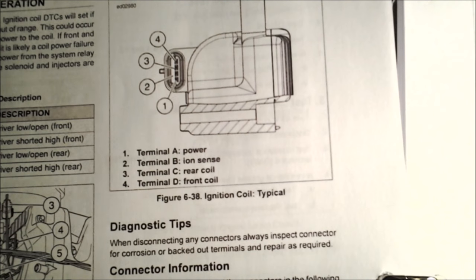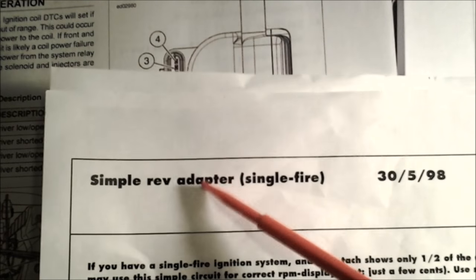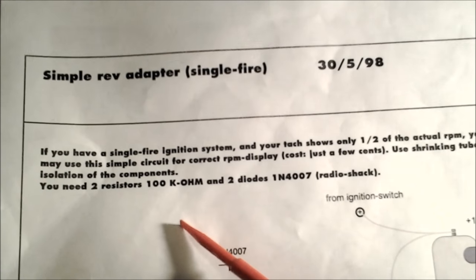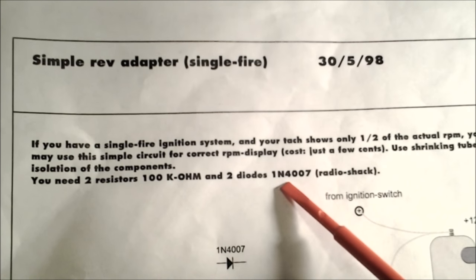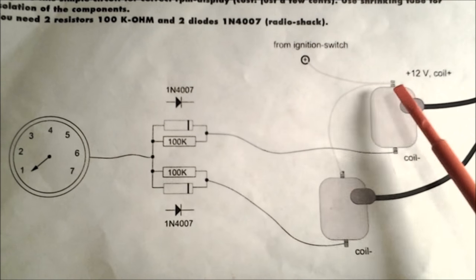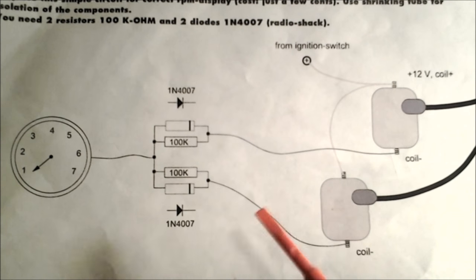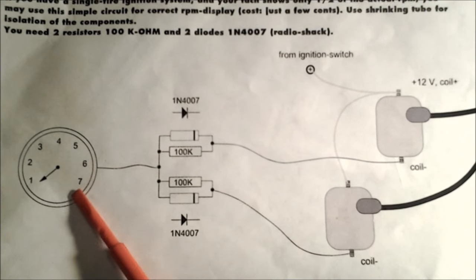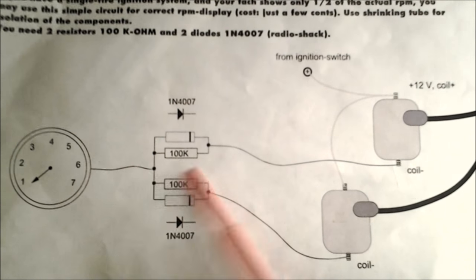I was looking online and found this page for a simple rev adapter for single fire ignition. It talks about using 200k resistors and two 1N4007 diodes, very common parts, to make this circuit. The two wires leading to the coils run to the diode resistor network and then to the tachometer, which actually corrects that error. Here's a picture version showing the two diodes and two resistors.